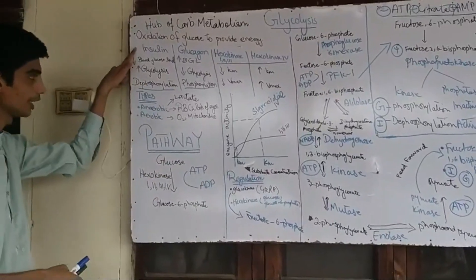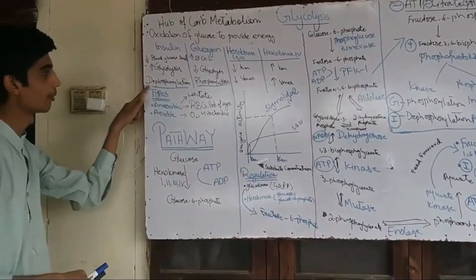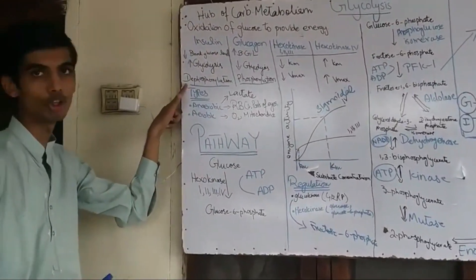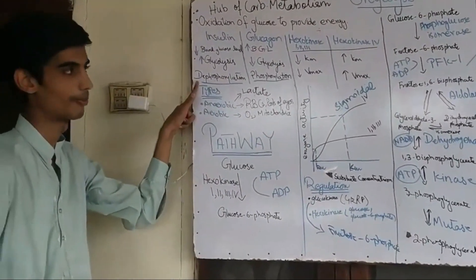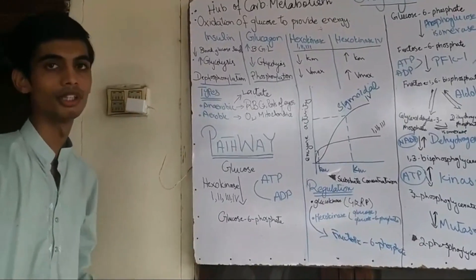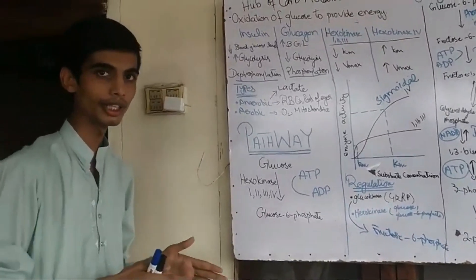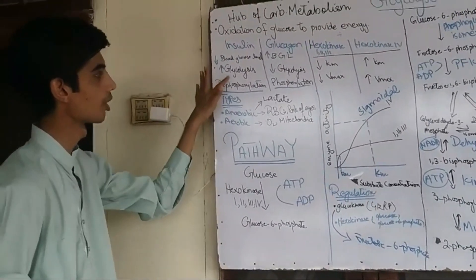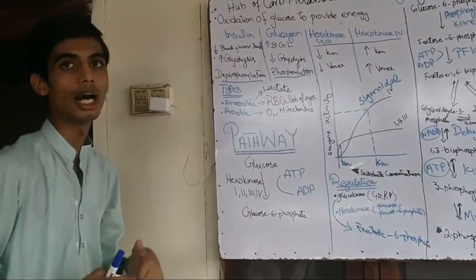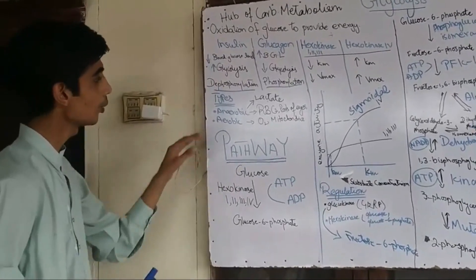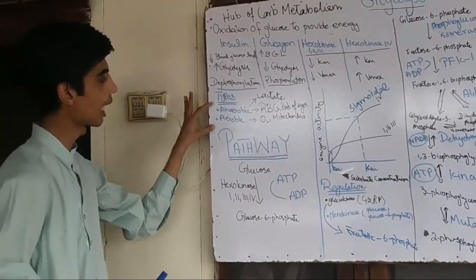Insulin performs its function through dephosphorylation of enzymes. When all the regulatory enzymes are dephosphorylated, the process of glycolysis is enhanced.